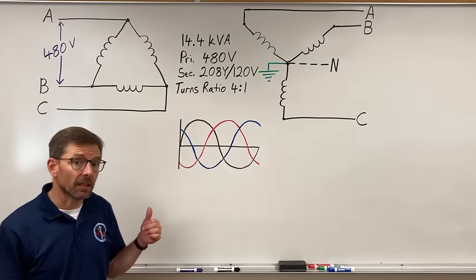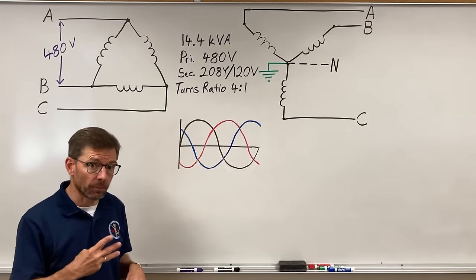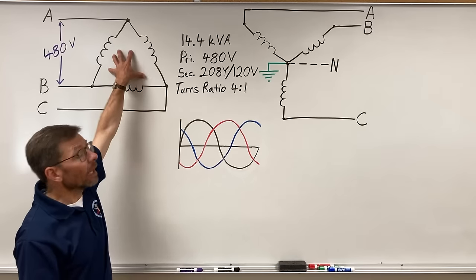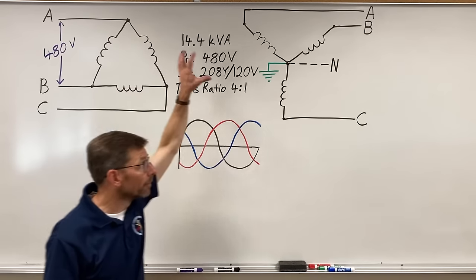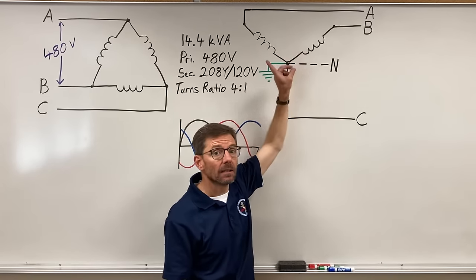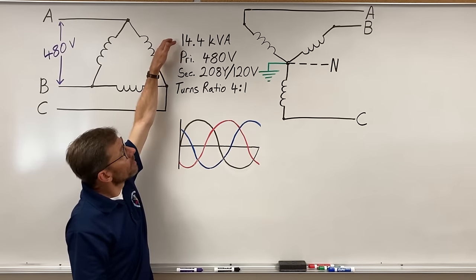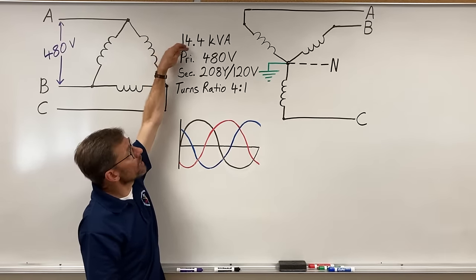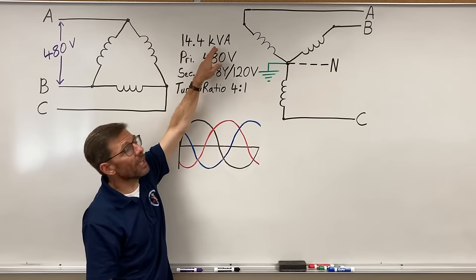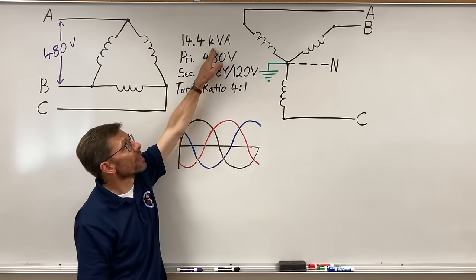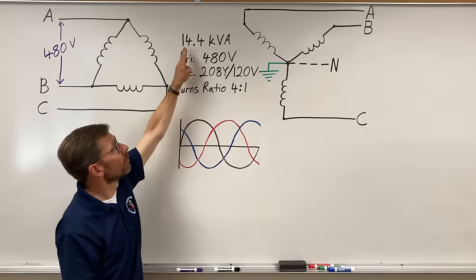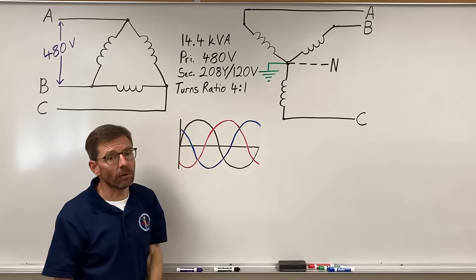Here I have a schematic of a three-phase transformer with a delta configured primary and a Y configured secondary. The power for this transformer is 14.4 kVA, thousands of volt amps, 14,400 volt amps.